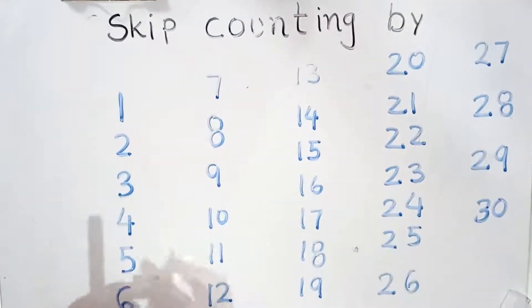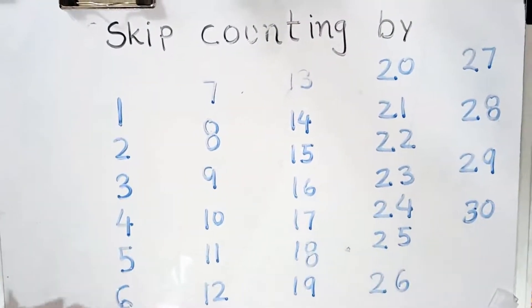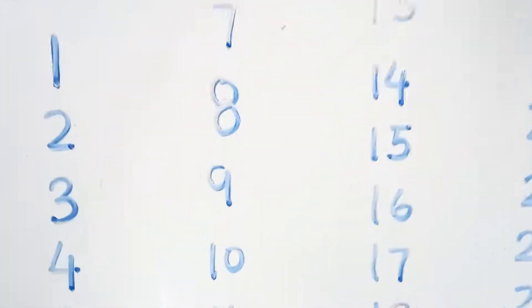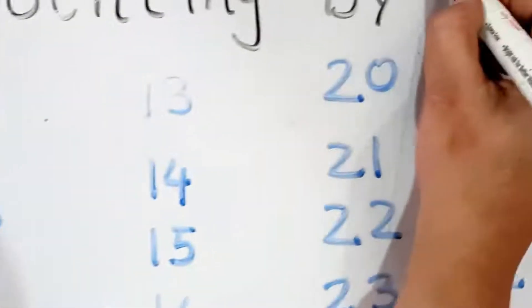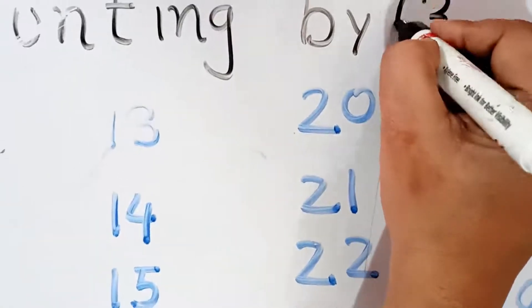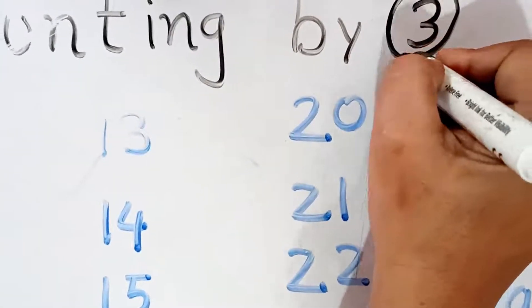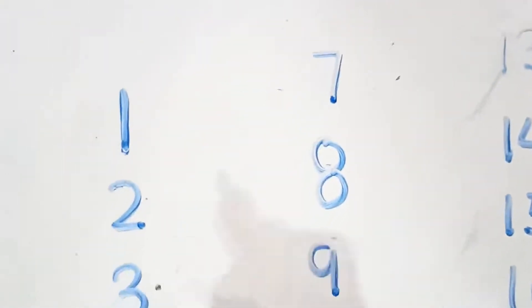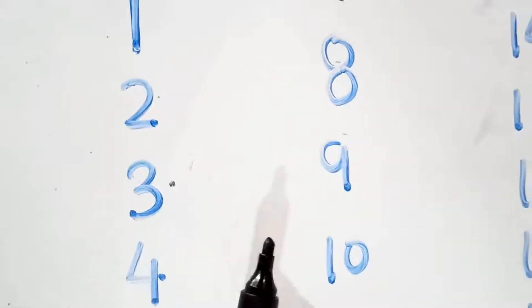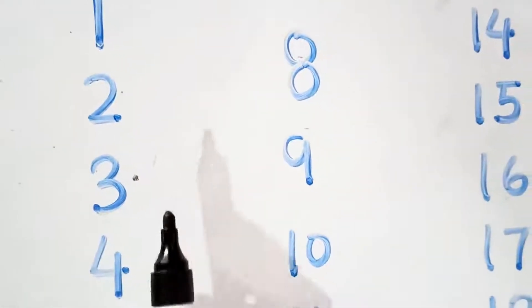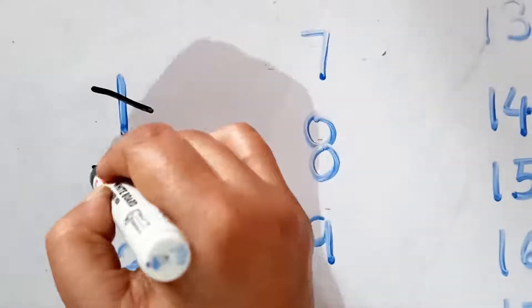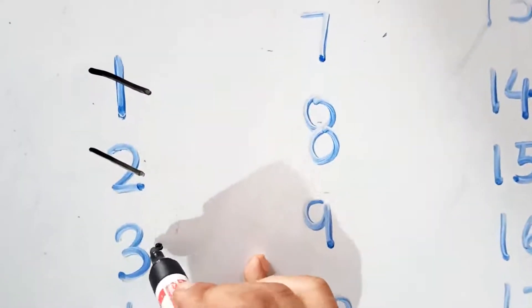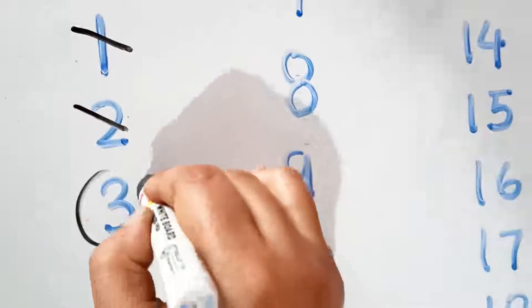Now, do you know what skip means? Skip means jump. We are jumping because this is skip counting by 3. We are starting from number 3, and we have to jump 3 numbers. We can cut 1, 2. We are starting from 3, so the first skip count is 3.